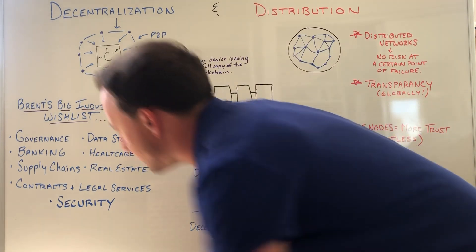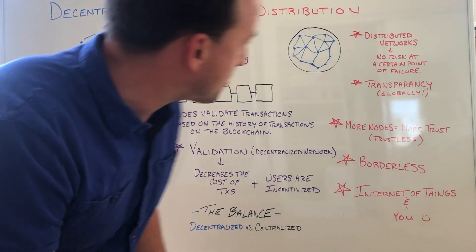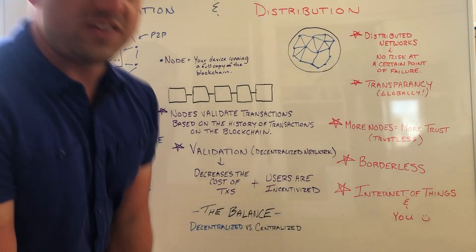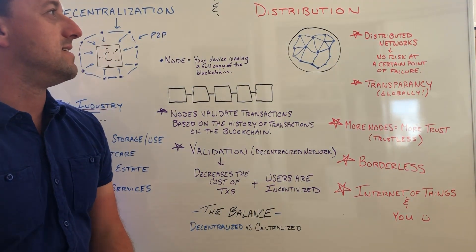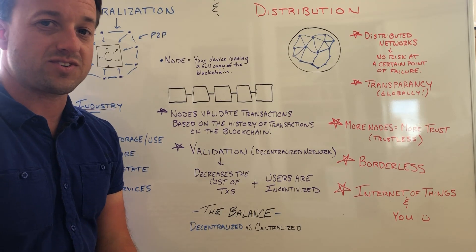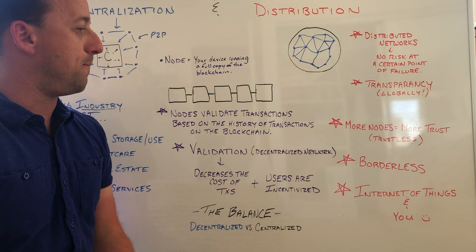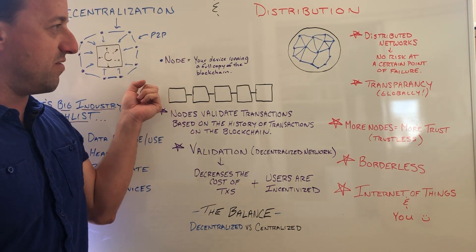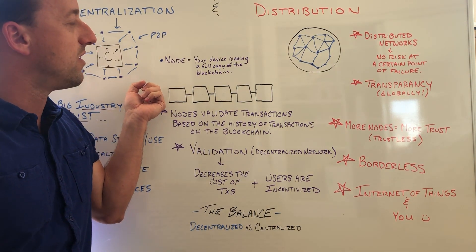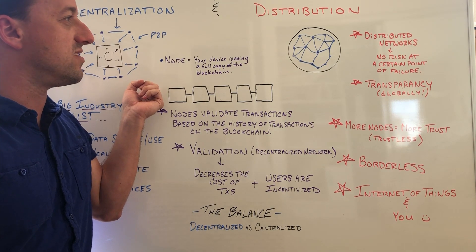And that is where we get into distribution. Another term we're going to hear all the time in the future is distributed ledgers, or distributed ledger technology — DLTs. Blockchain is kind of the parent to DLTs, but they're essentially the same thing, with some differences.